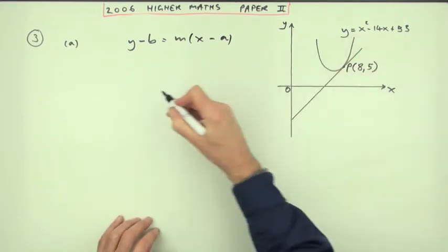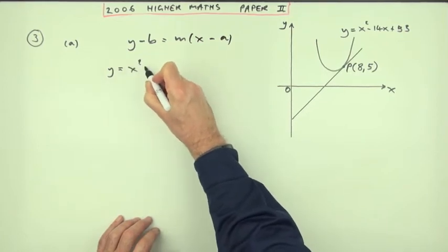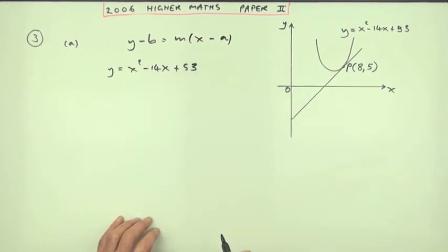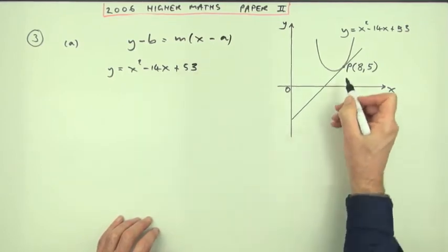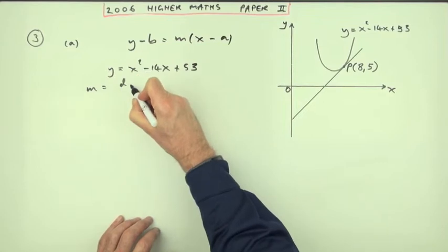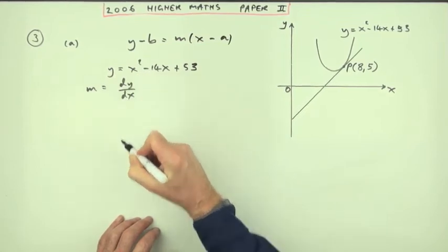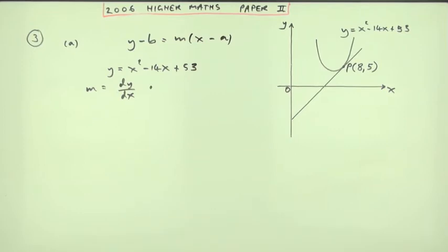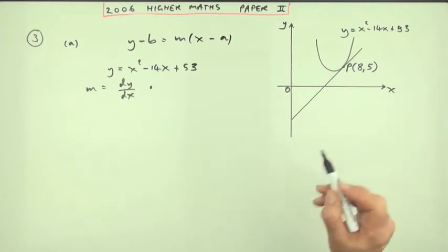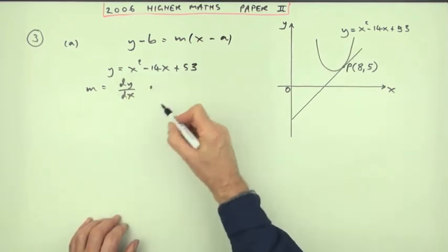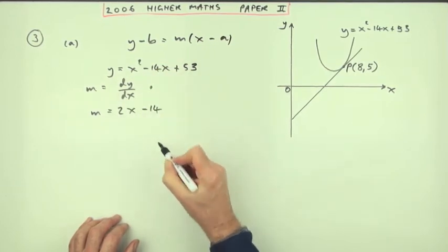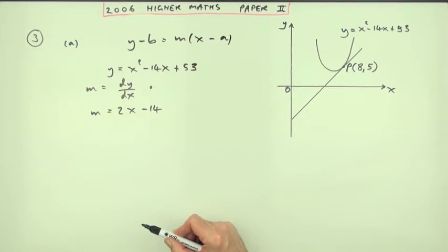So I'll note that y equals x squared minus 14x plus 53, and the gradient at this point will be the same as the derivative. That's the first mark — knowing to differentiate, since the derivative gives you the slope at each point on a curve rather than just its height y. Actually carrying out the differentiation gives the second mark: m equals 2x minus 14, multiplying by the power and reducing the power by one.